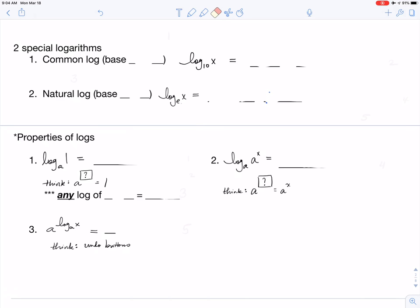The first special logarithm is the common log. The common log always has a base of 10. You'll see I've written it as log base 10 of x, but please understand we're never going to write a base 10 in this form. What we're going to do is write our log with no base, so the absence of a base will automatically tell us that it's a base of 10.